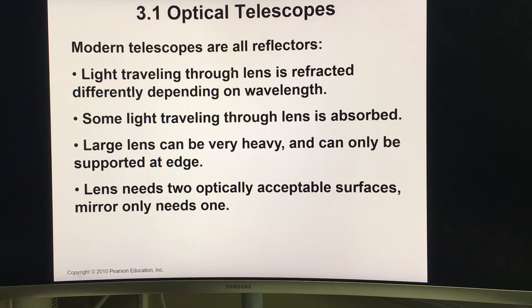There are some benefits using reflecting telescopes. Light traveling through lens is refracted differently depending on wavelength. In other words, light is going to bend differently if the wavelength is different. For blue light or red light, light is going to bend in different directions. Some light traveling through lens is absorbed, so you're going to lose some of the light because of traveling through the lens.